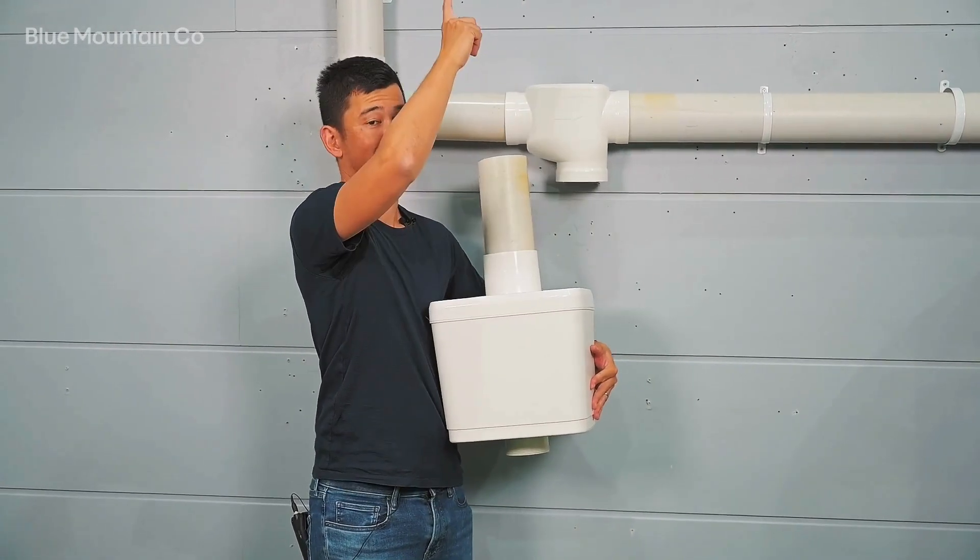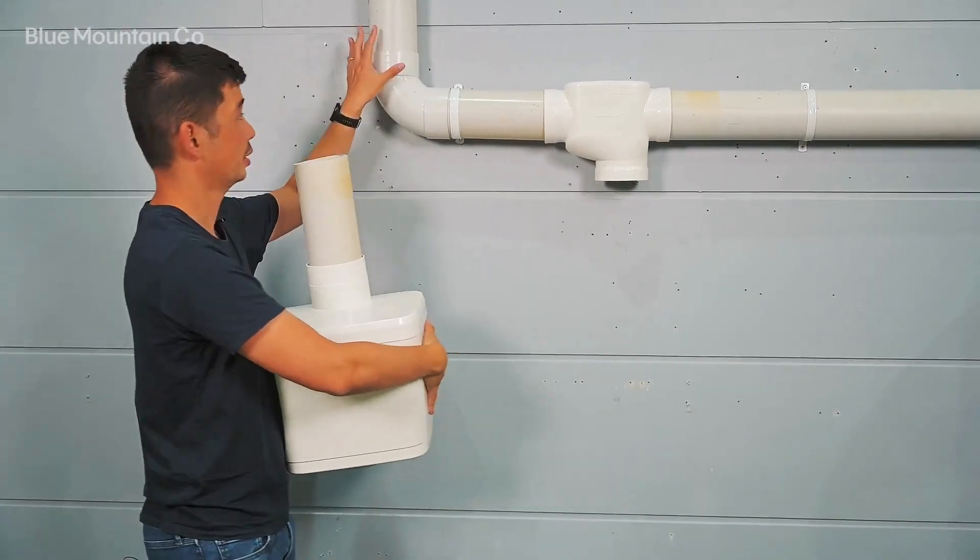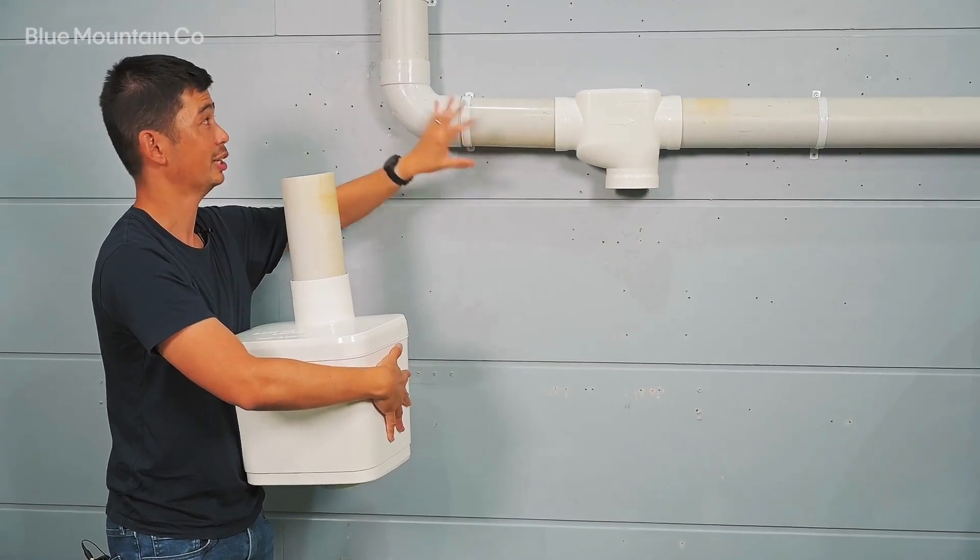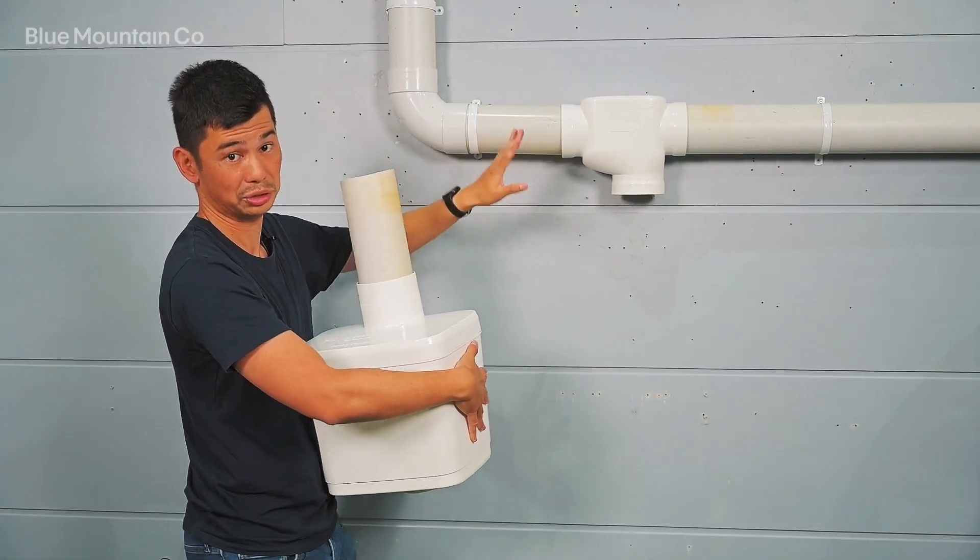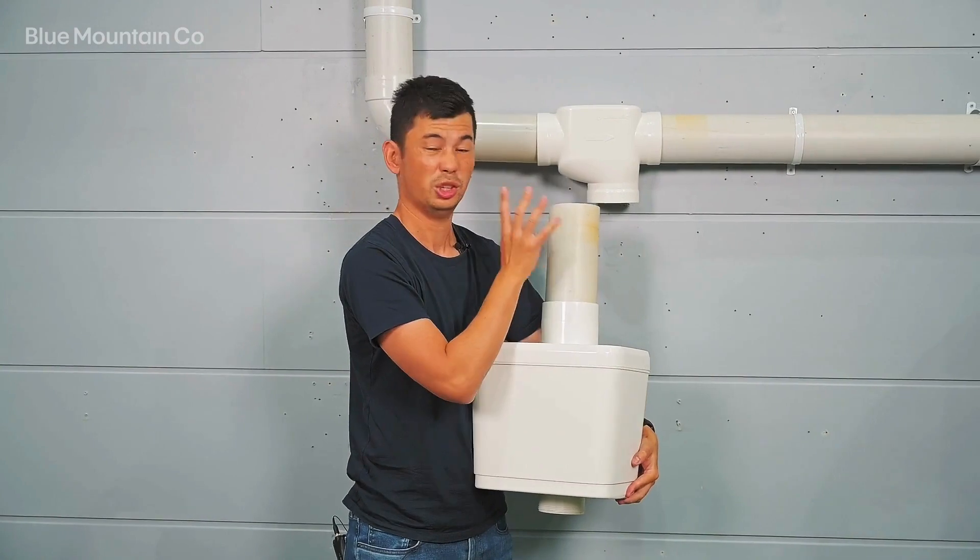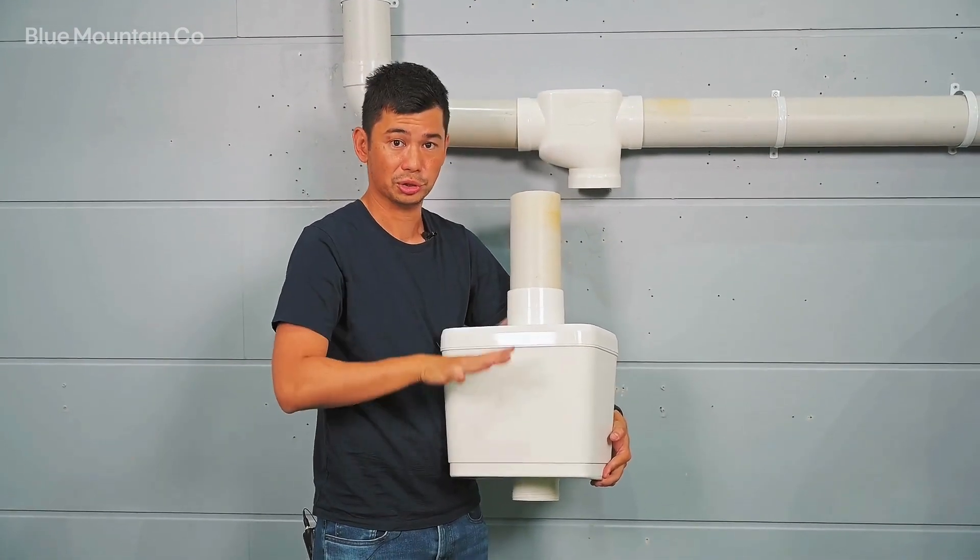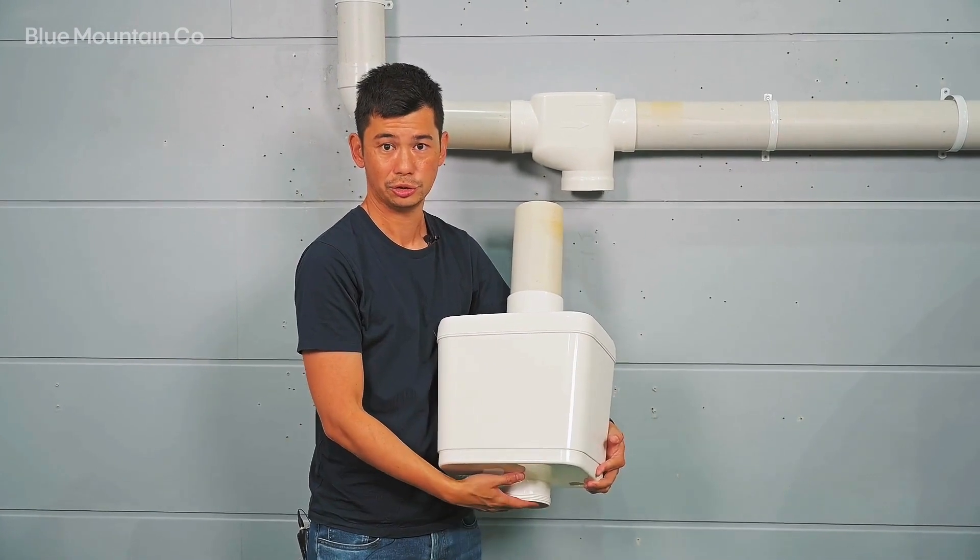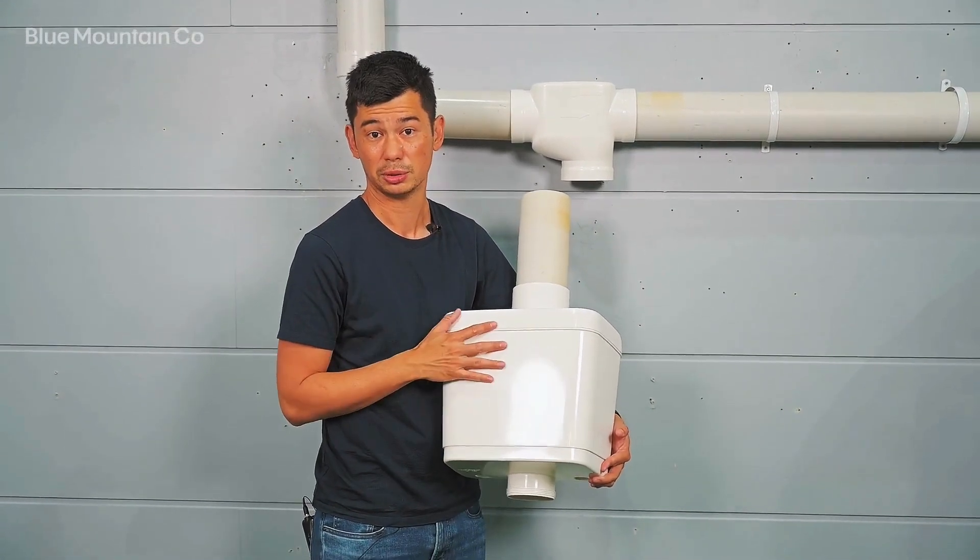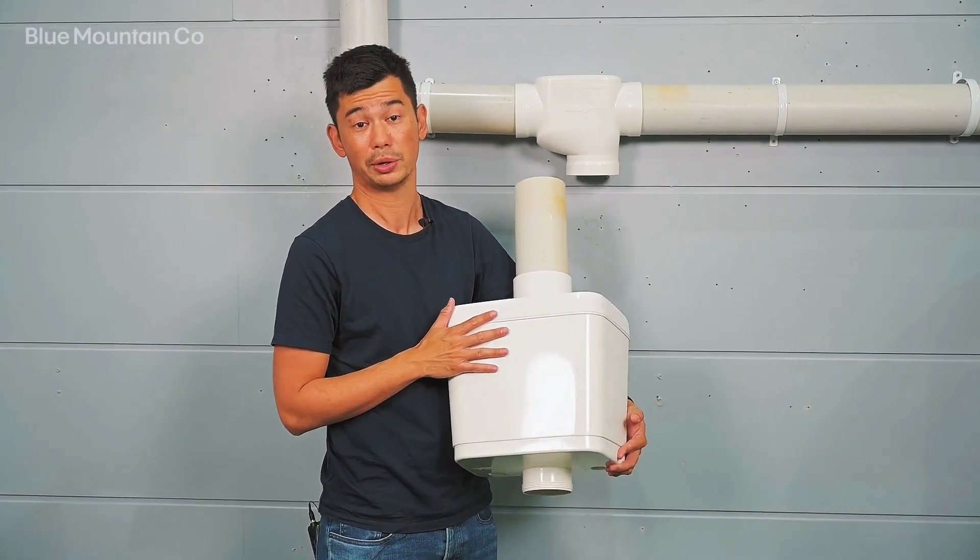If that pipe happens to be higher, or if you're installing it vertically and the T piece happens to be higher just based on your particular property, you might want this to be a bit lower or a bit longer, so that the boost is sitting lower. And that will allow you to access the base for any maintenance which might need to happen periodically.